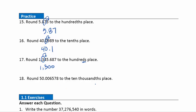Question 18: we're rounding to the ten-thousandths place. Let's find it: tenths, hundredths, thousandths, ten-thousandths. So the five is our digit. The seven to the right tells us to round that five up one. So our final answer is fifty point zero zero six six.